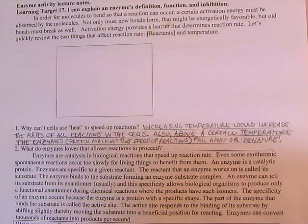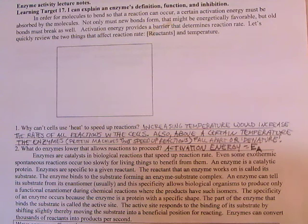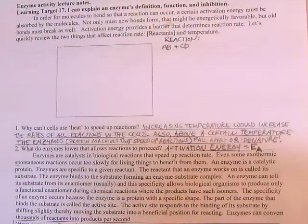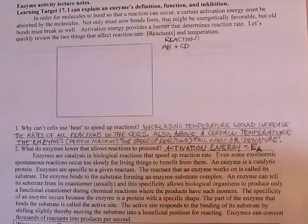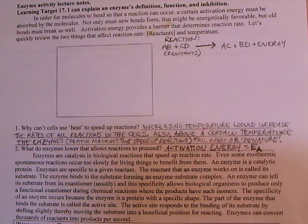What do enzymes lower that allows reactions to proceed? It is activation energy that enzymes lower. Now let's look at a chemical reaction. We're going to have two reactants: reactant AB and reactant CD, which combine to produce products AC, BD, and some energy.